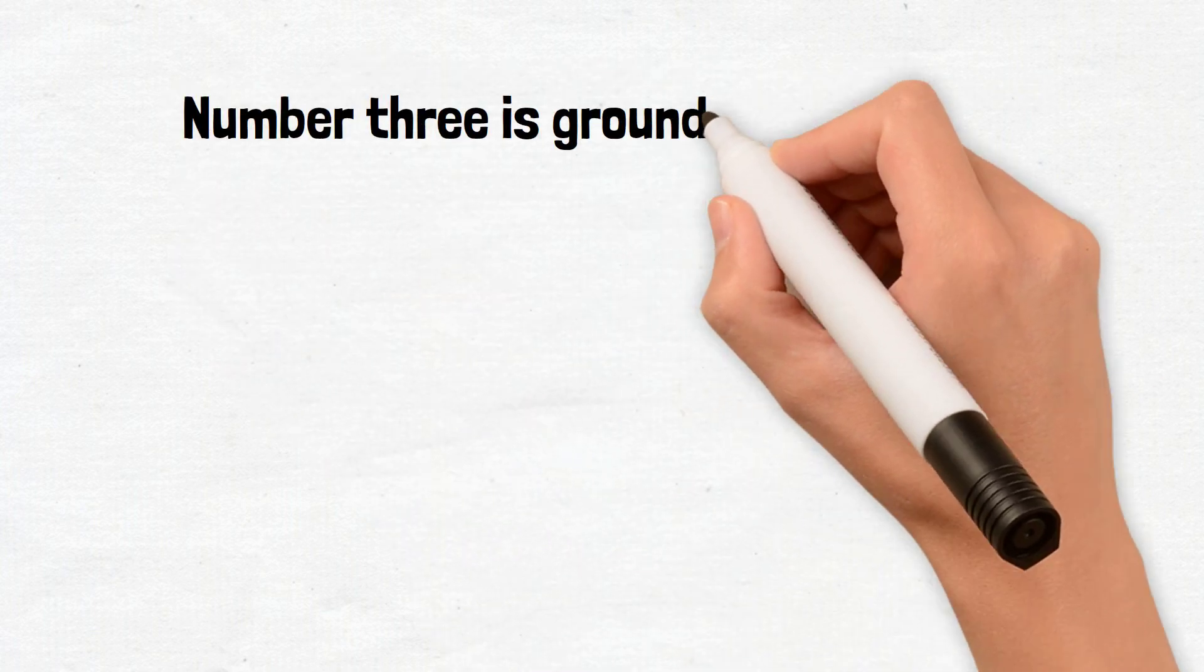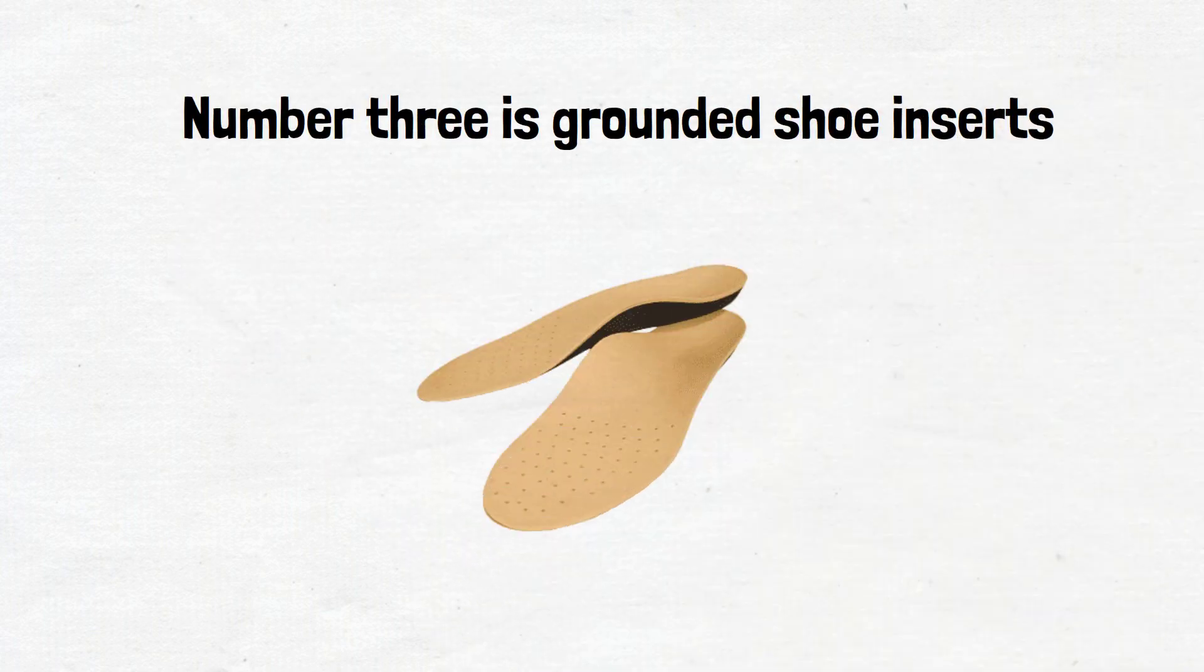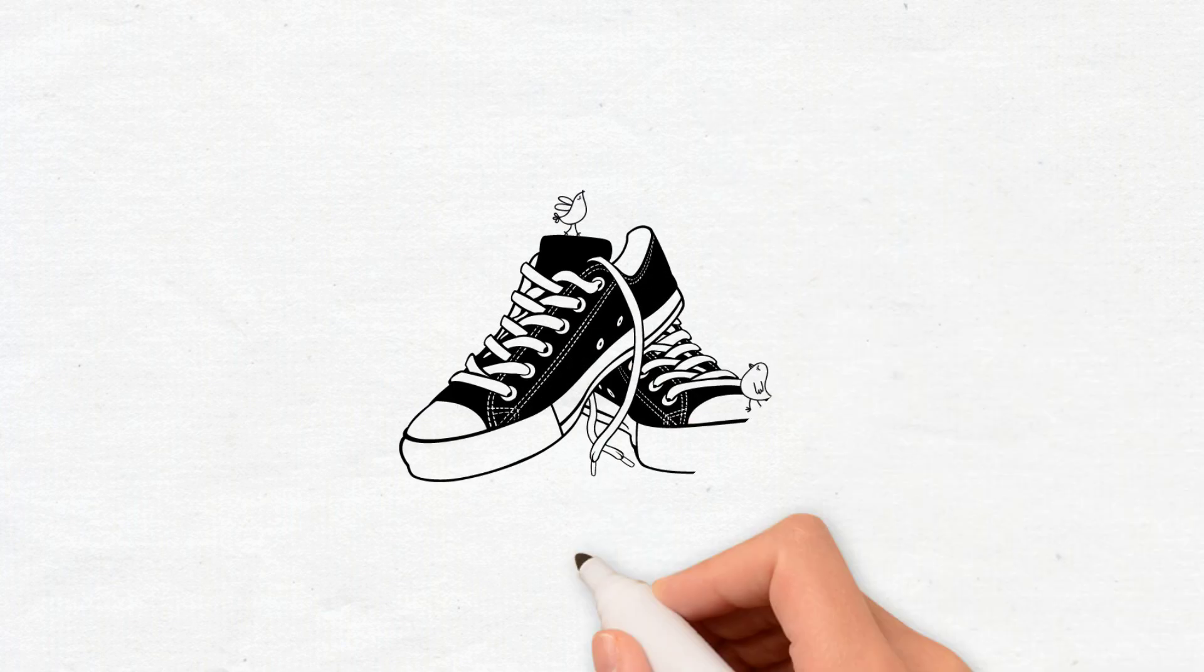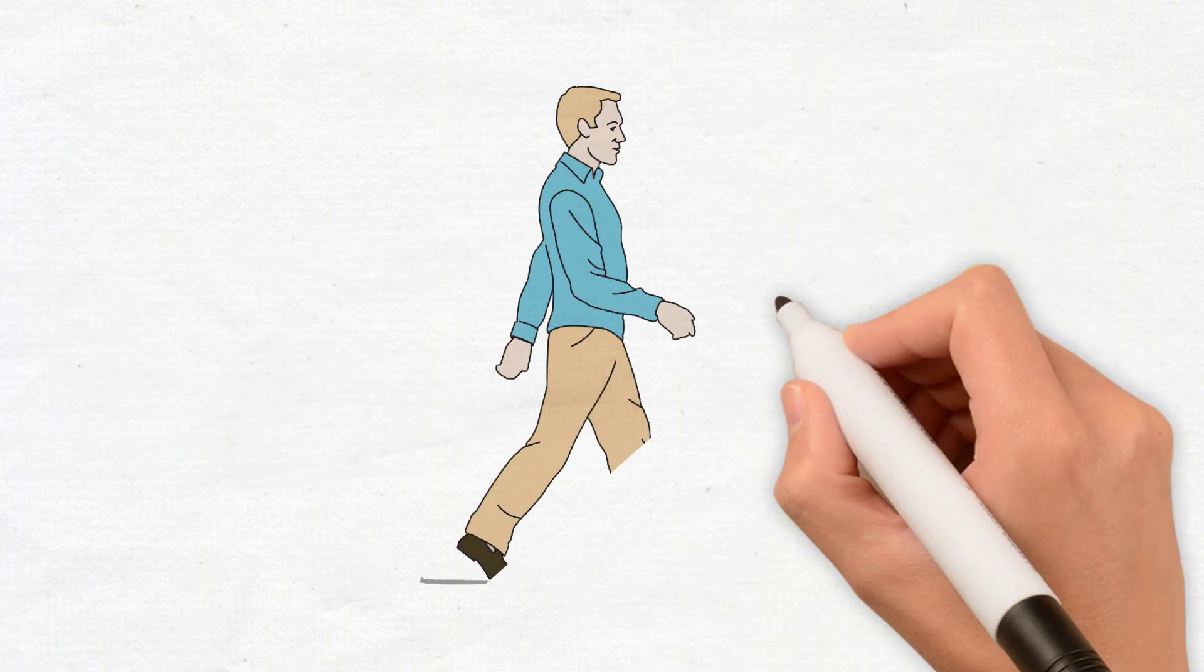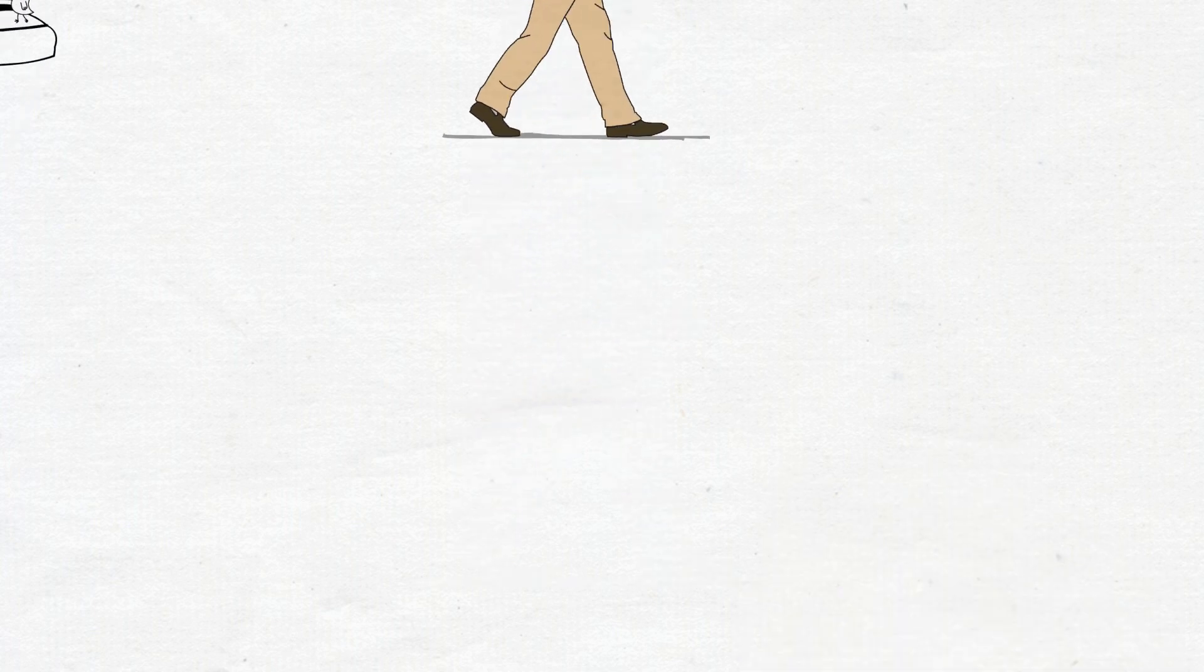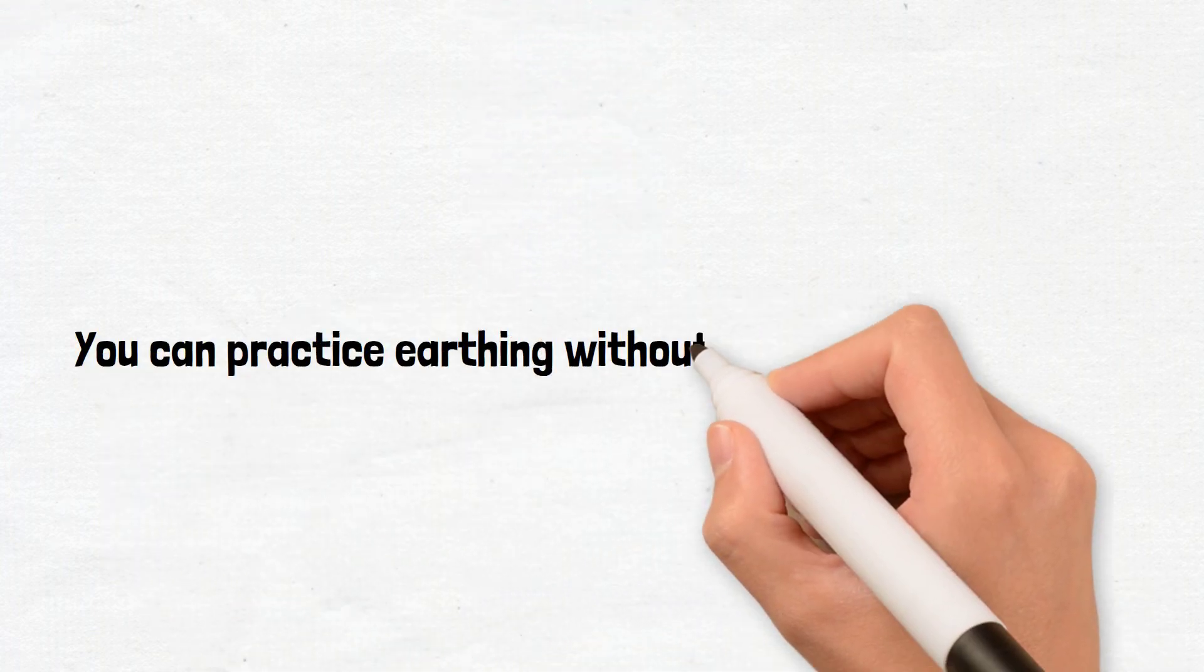Number three is grounded shoe inserts. These inserts can be placed in your regular shoes, providing a conductive connection between your feet and the Earth's surface when walking on natural ground. This way you can practice earthing without having to go barefoot.